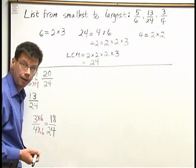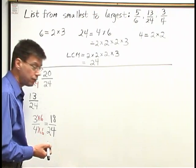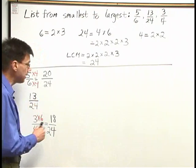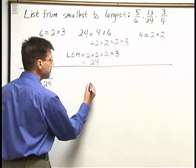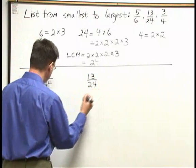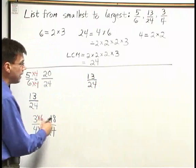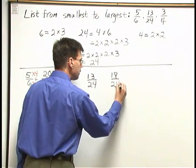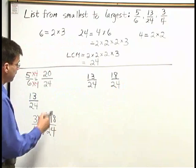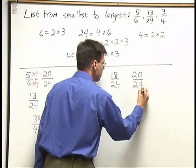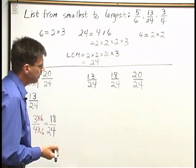Since they have a common denominator, I write them in order of increasing numerators. The smallest number on top is 13, so I have 13 24ths is the smallest fraction. Then comes 18 24ths. And then comes 20 24ths.